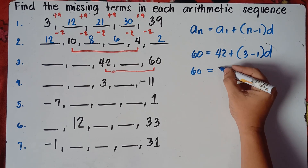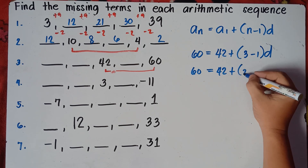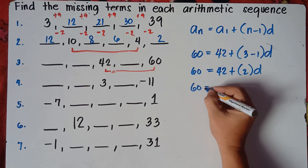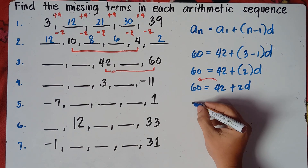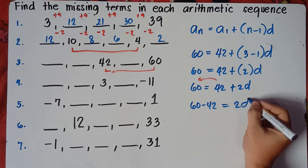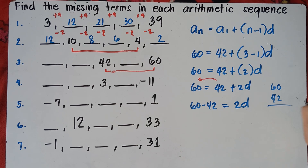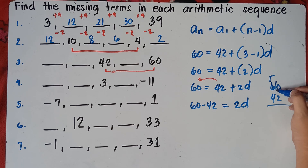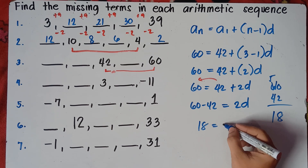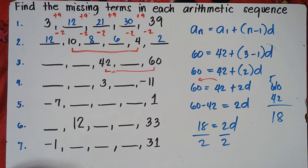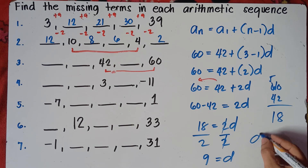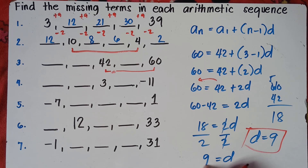This is the approach when you don't have the first term — you adjust, making the first known term your first term and the last known term your last term, counting only those terms. So 60 equals 42 plus 2d. Transpose 42: 60 minus 42 equals 2d. 60 minus 42 is 18, so 18 equals 2d. Divide both sides by 2: d equals 18 divided by 2, which is 9. Our d equals 9.